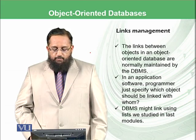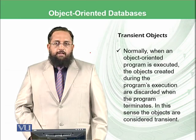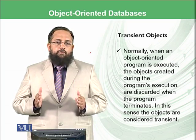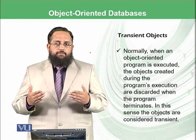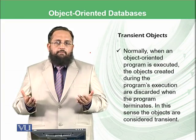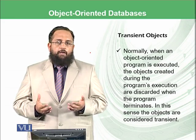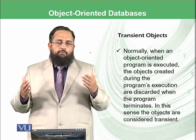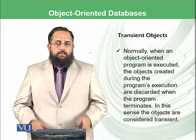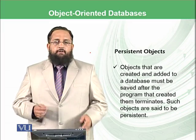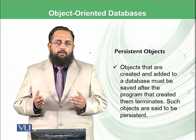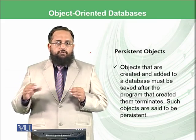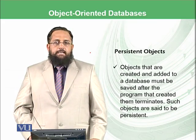The DBMS might manage links using lists, as studied in the last module. There are two types of objects. Normally in the object-oriented paradigm, when you create objects and implement a problem, at the end you discard all the objects residing in memory — these are known as transient objects. However, in the object-oriented database model, we need to store such objects in secondary storage, and these are called persistent objects.